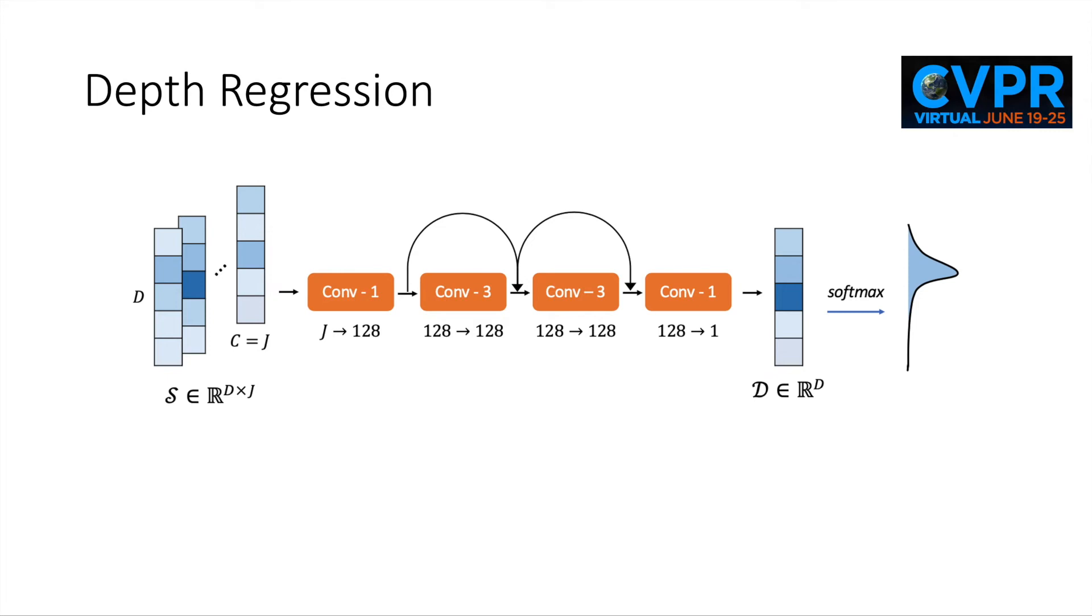We propose a local soft argmax operator to deal with multi-modal distributions, which are commonly observed in multi-person scenarios when people are close to each other. Specifically, a window of fixed size slides over the depth vector to search for the window with the highest response, and we apply the standard soft argmax on the window to produce the scalar depth.